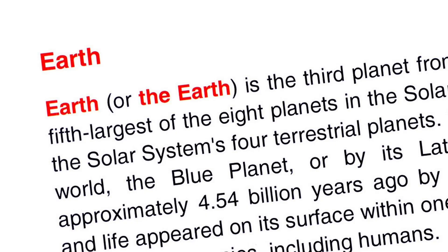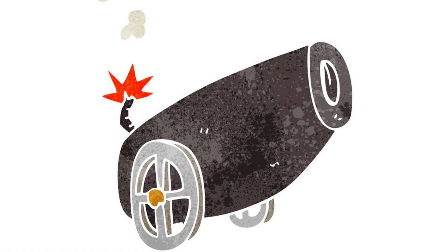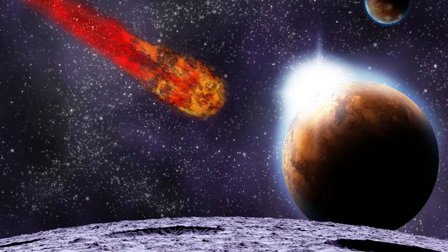Formation of Earth: one of these protoplanets became Earth. Over millions of years, it continued to accrete material from the surrounding disk. Collisions with other large objects were common during this period, and one such collision with a Mars-sized object is believed to have created the moon.